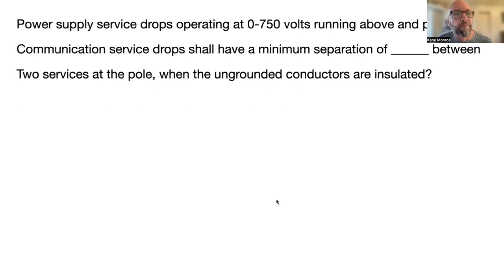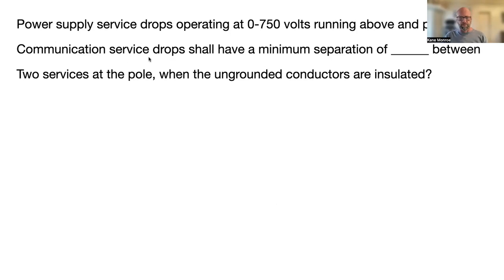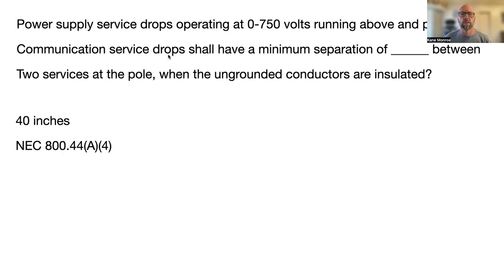Next question: power supply service drops operating at 0 to 750 volts running above and parallel to communication service drops shall have a minimum separation of blank between the two services at the pole when the ungrounded conductors are insulated. If you don't know the answer, go to the keyword index and look up 'communication service drops.' The answer is 40 inches — found at NEC 800.44(A)(4). Go ahead and highlight that.